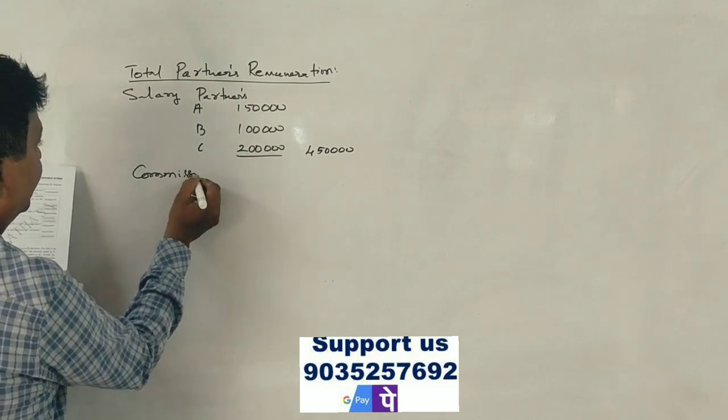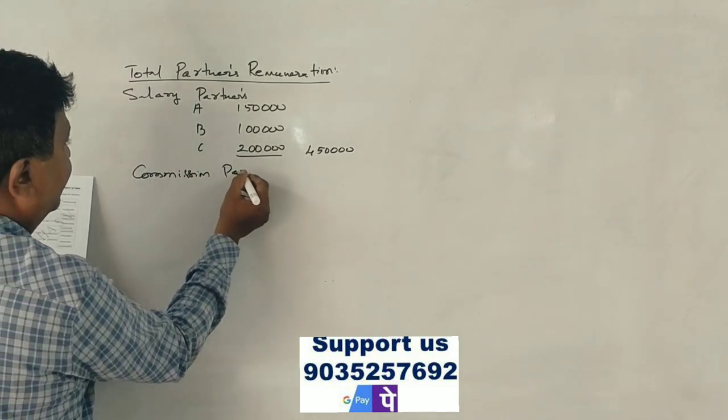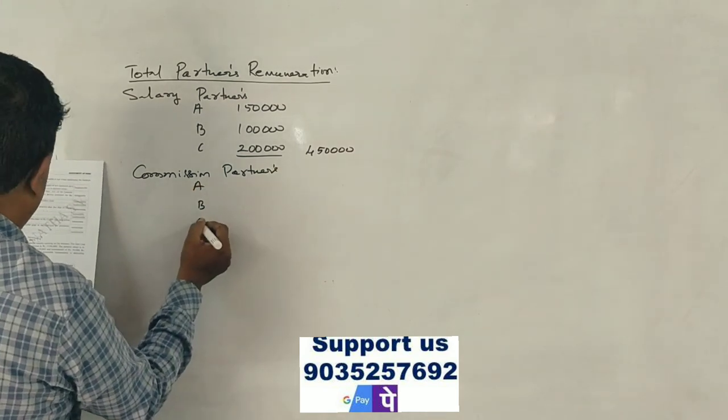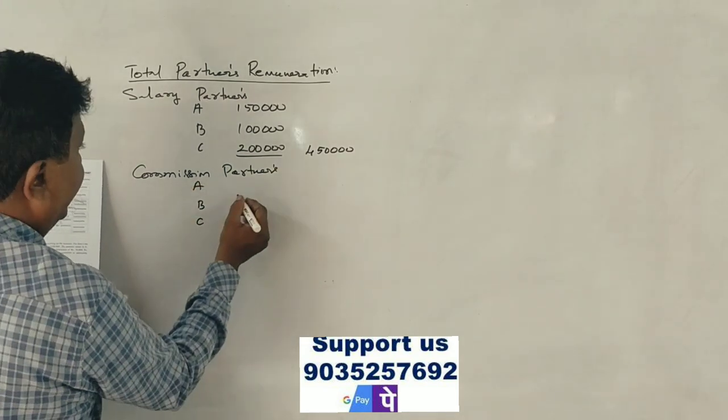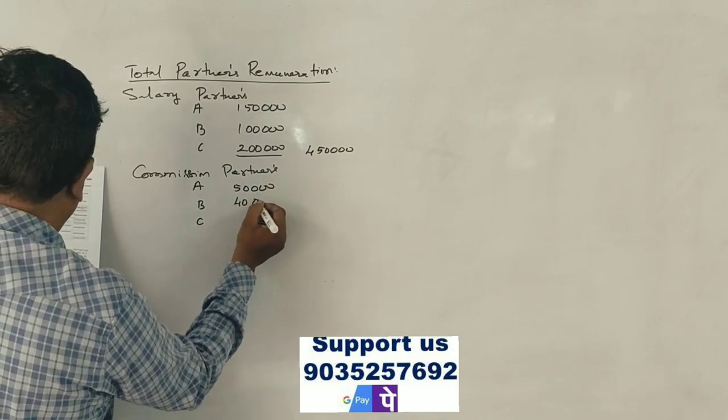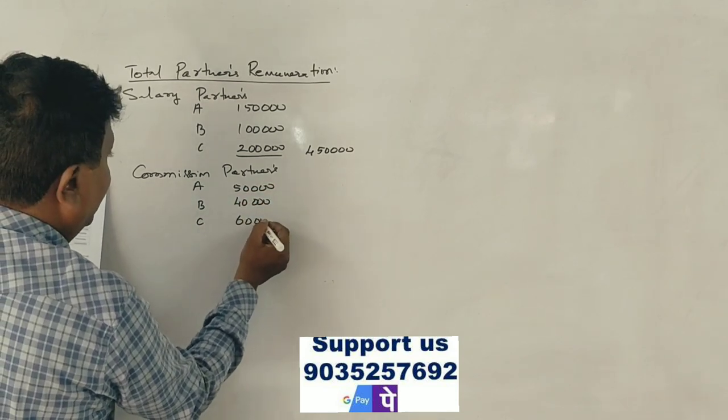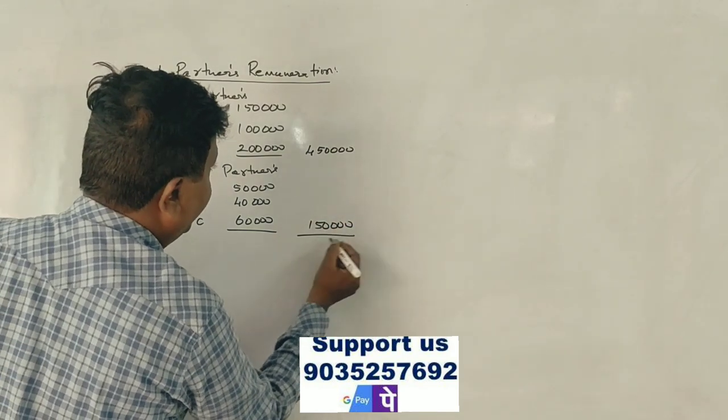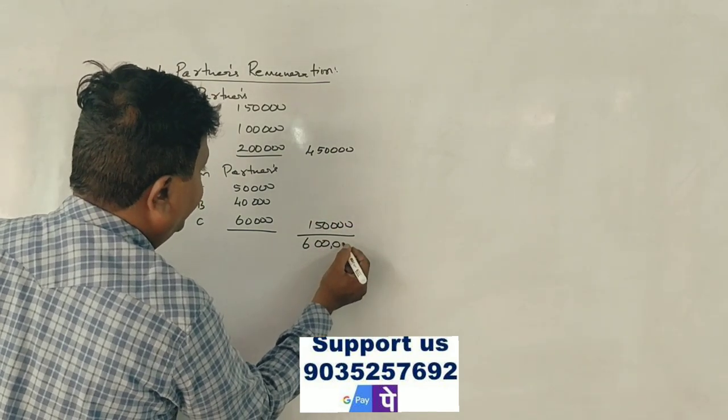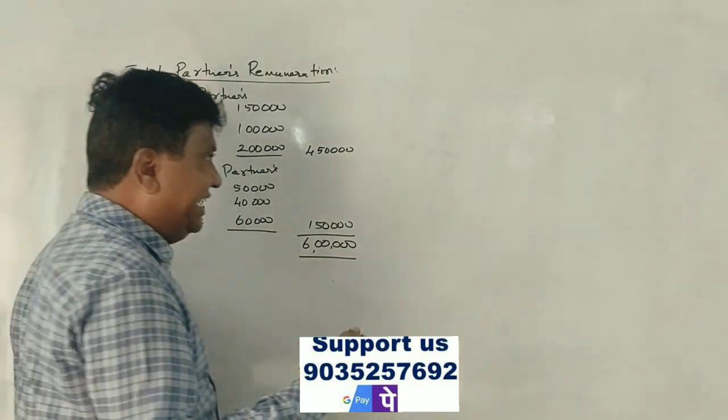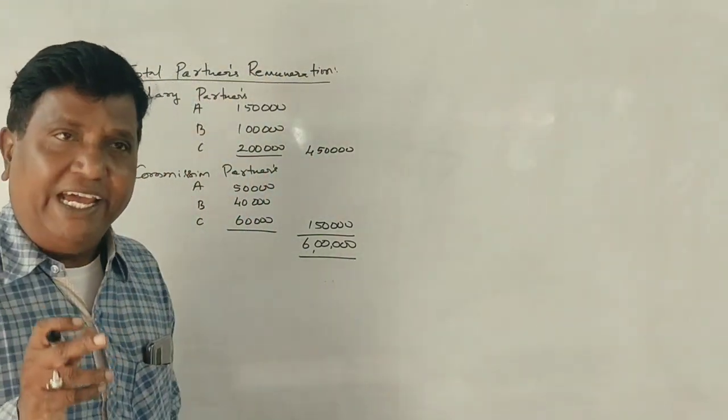Commission to partners A, B and C. A is 1 lakh 50,000, B is 40,000, C is 60,000. Total 1 lakh 50,000 rupees. Total remuneration is 6 lakh rupees.